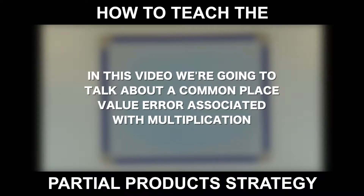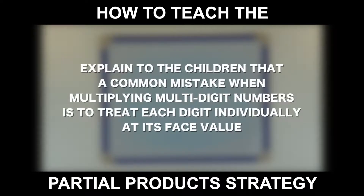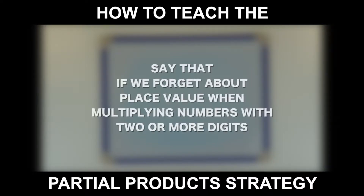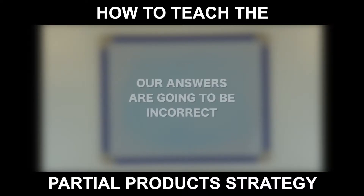In this video, we are going to be talking about a common place value error associated with multiplication. Explain to the children that a common mistake when multiplying multi-digit numbers is to treat each digit individually at its face value rather than its place value. Say that if we forget about place value when multiplying numbers with two or more digits, our answers are going to be incorrect.